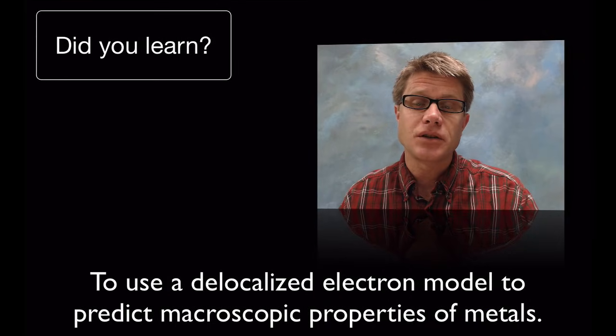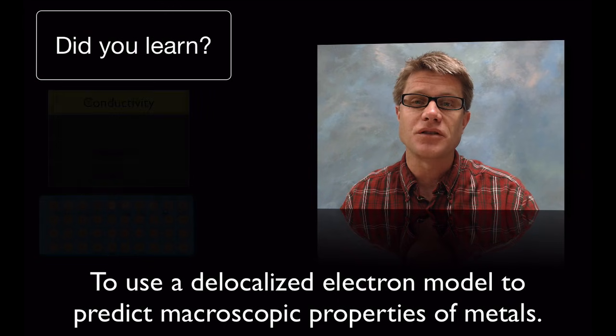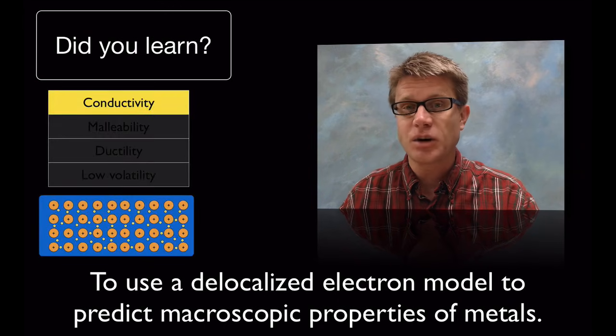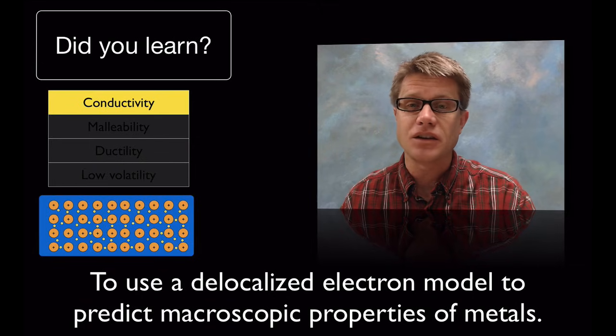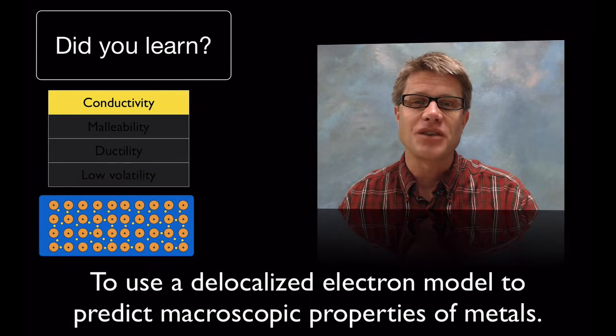And so metallic bonding is pretty simple. Did you learn to use a delocalized electron model to predict macroscopic properties of metals? If you understand the sea model and you see how it affects conductivity, malleability, ductility and low volatility, then you got it. And I hope that was helpful.